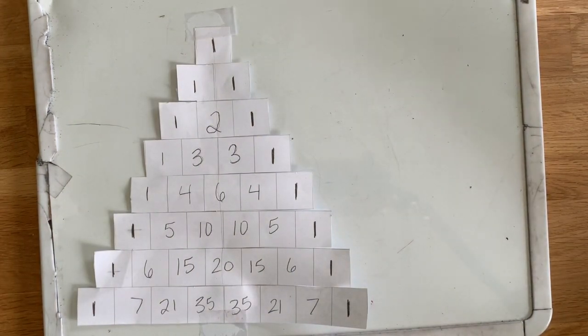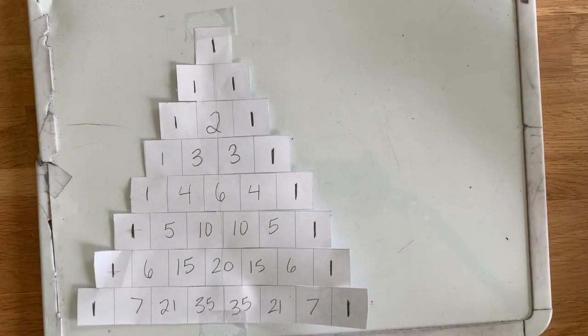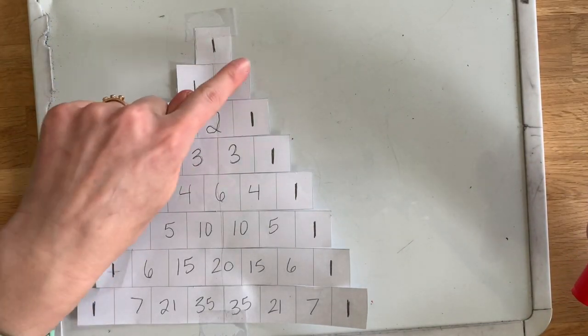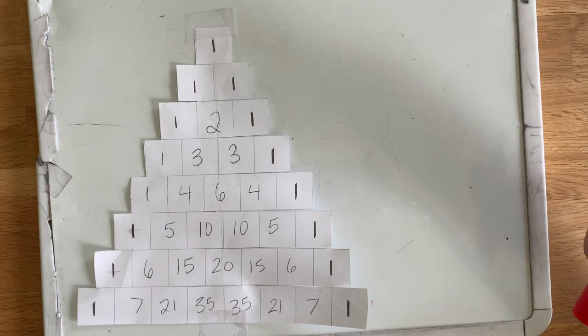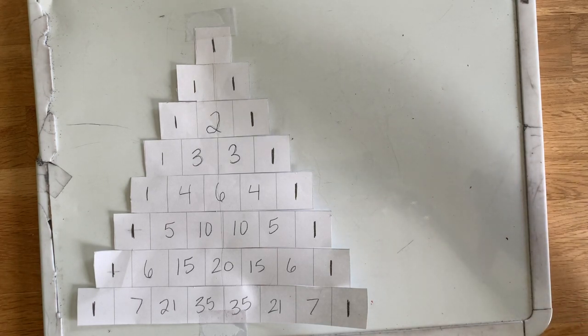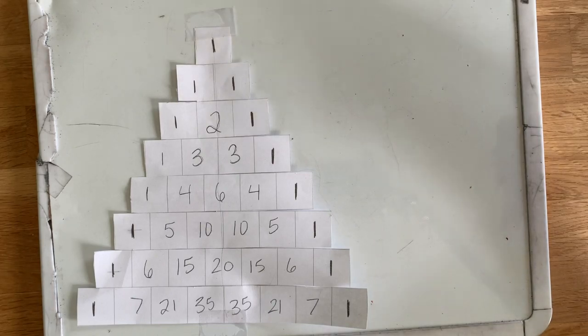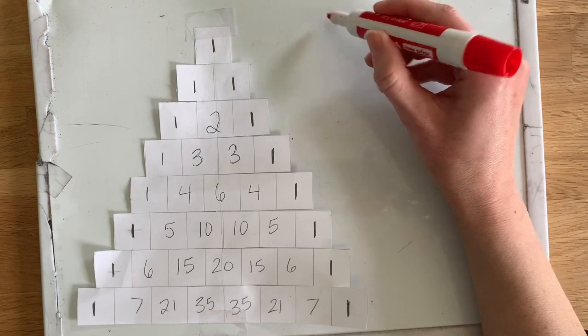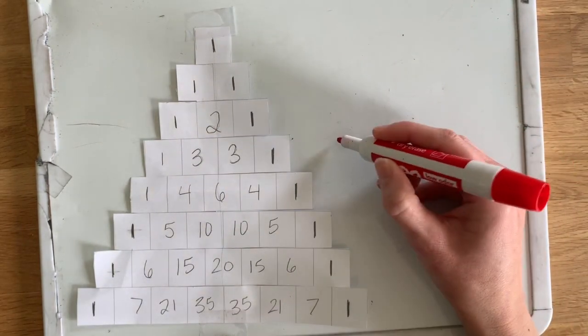And then this one is really, really, really cool. So we can find the squares of numbers. For the second diagonal, this is the first diagonal, this is our second diagonal. The square of a number is equal to the sum—sum means when you add two things together and you get the answer. The square of the number is equal to the sum of the numbers next to it and below both of those.